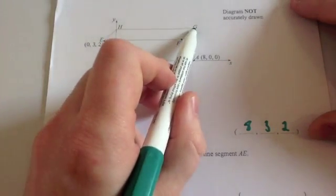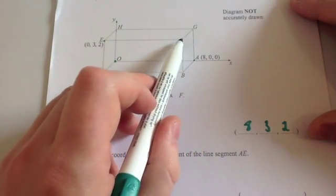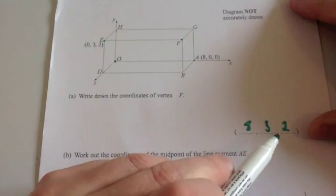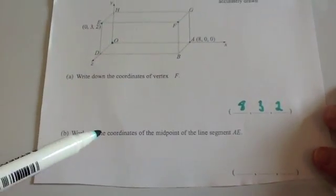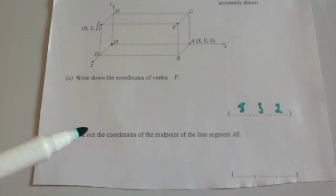And then it's going to come out 2 in the Z direction. So it's 8, 3, 2.